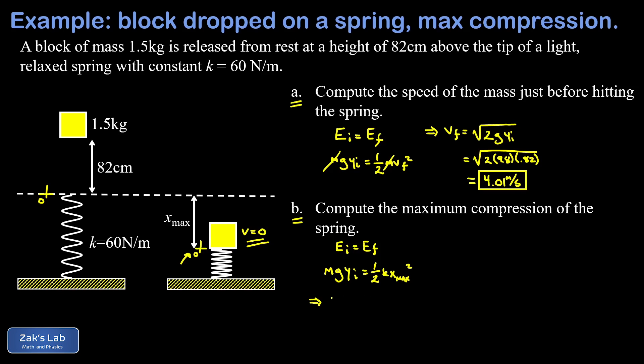All right, so now we can plug in some numbers. We have 1.5 kilograms for the mass, 9.8 the approximate value of g, and then being very careful about y initial, that's x max plus 0.82 meters.